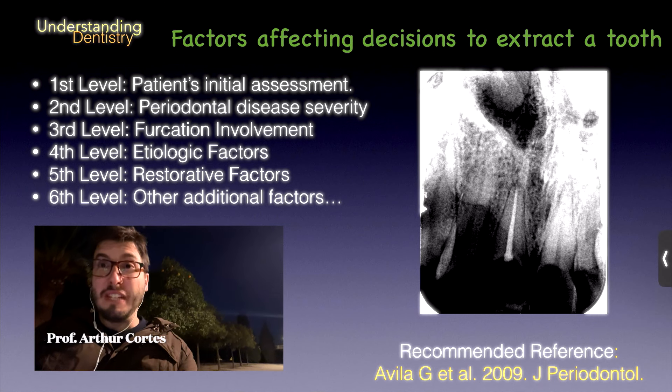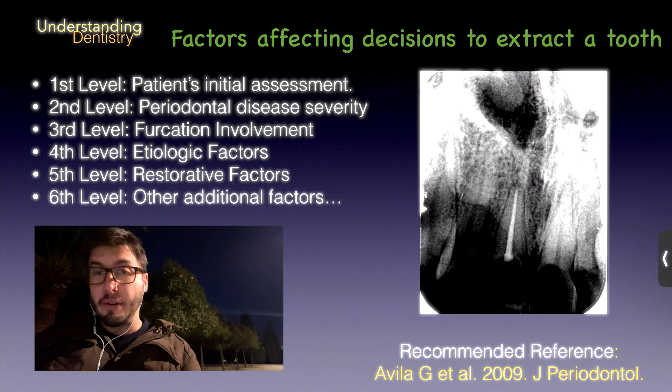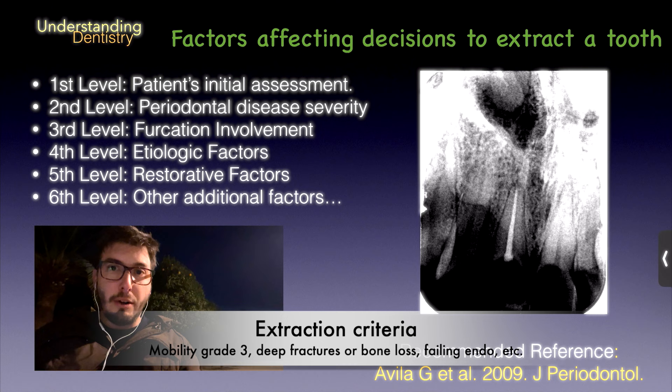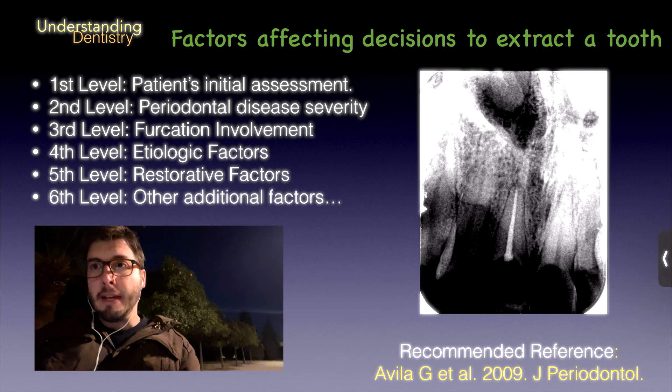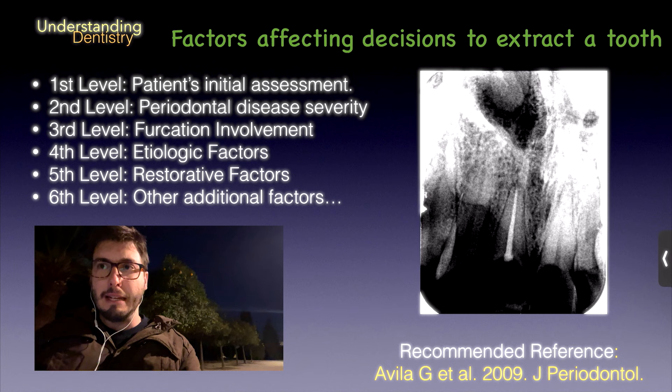Welcome to this video about factors affecting decisions to extract a tooth. Of course, that goes beyond the factors considered extraction criteria that you already know — such as fracture of roots extending beyond the alveolar crest, failing endodontic treatments, prosthetic reasons, and marginal bone loss to certain levels. Basically, all those factors have already been described by the books.